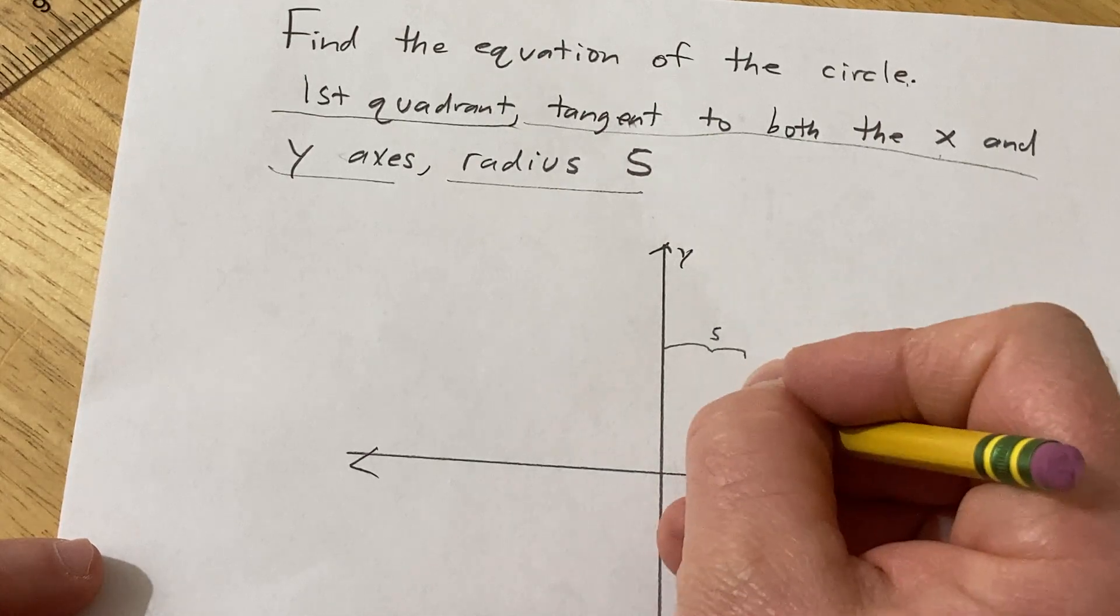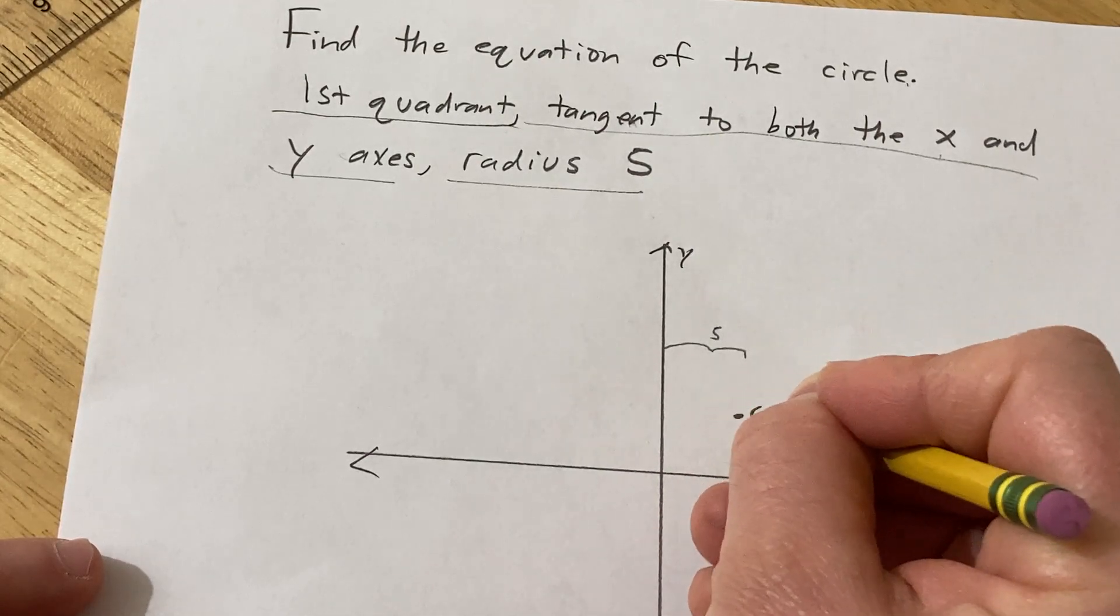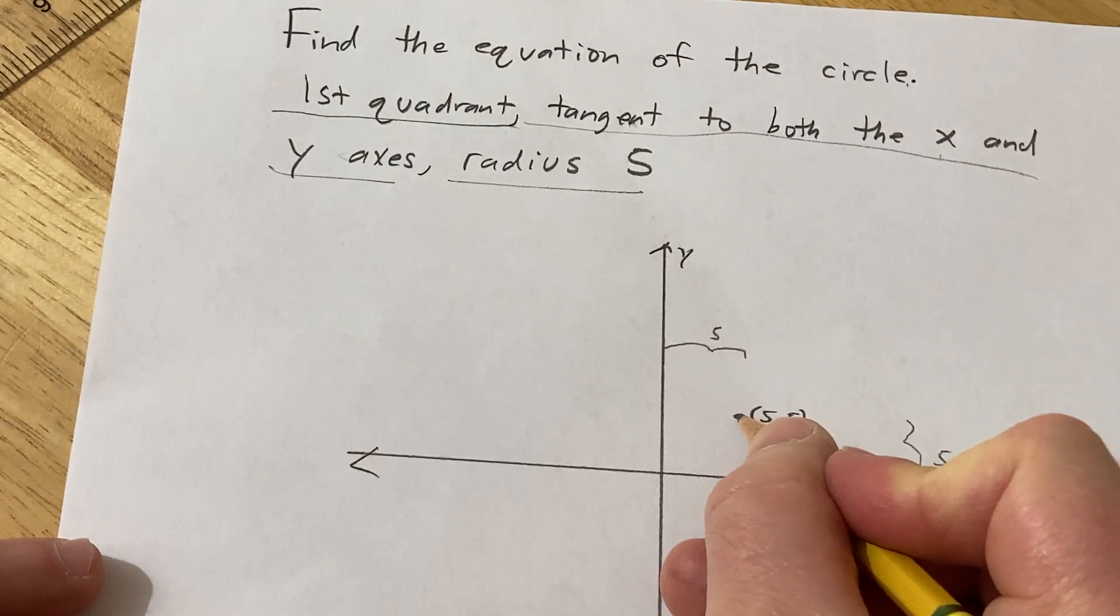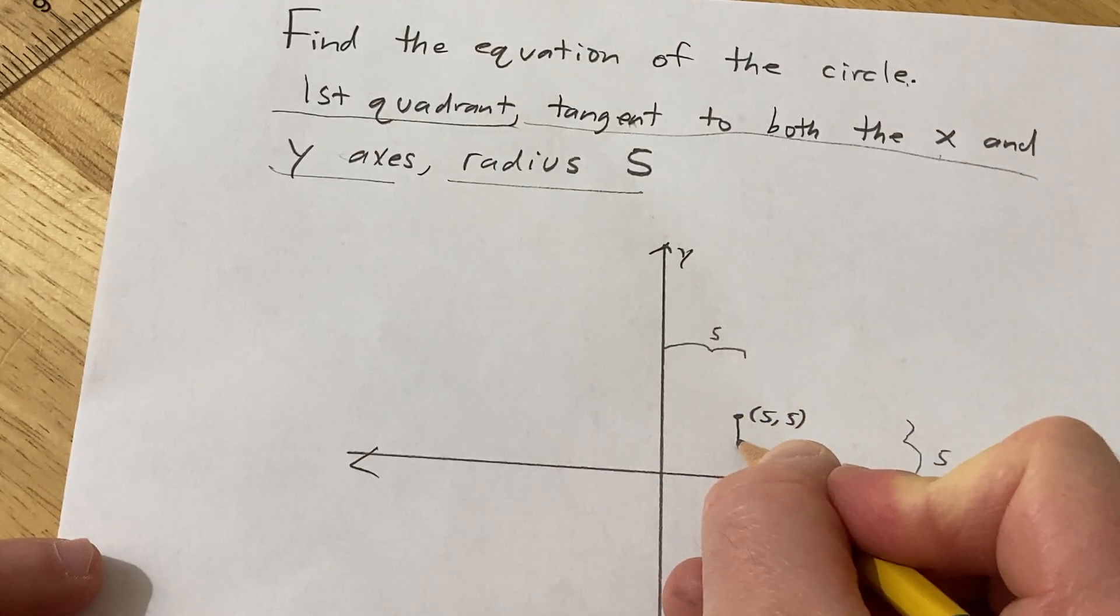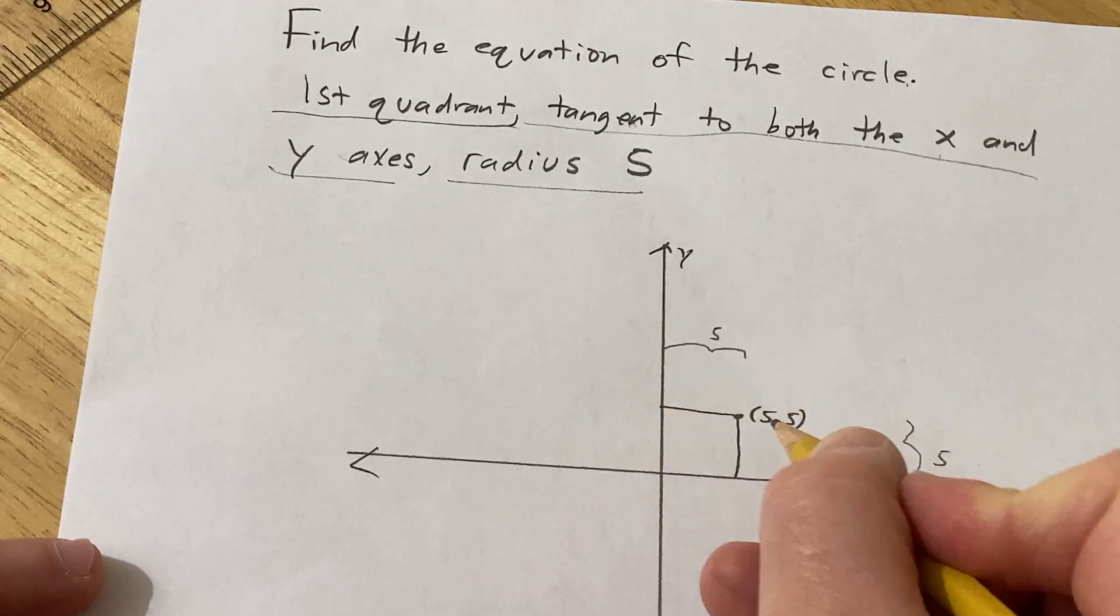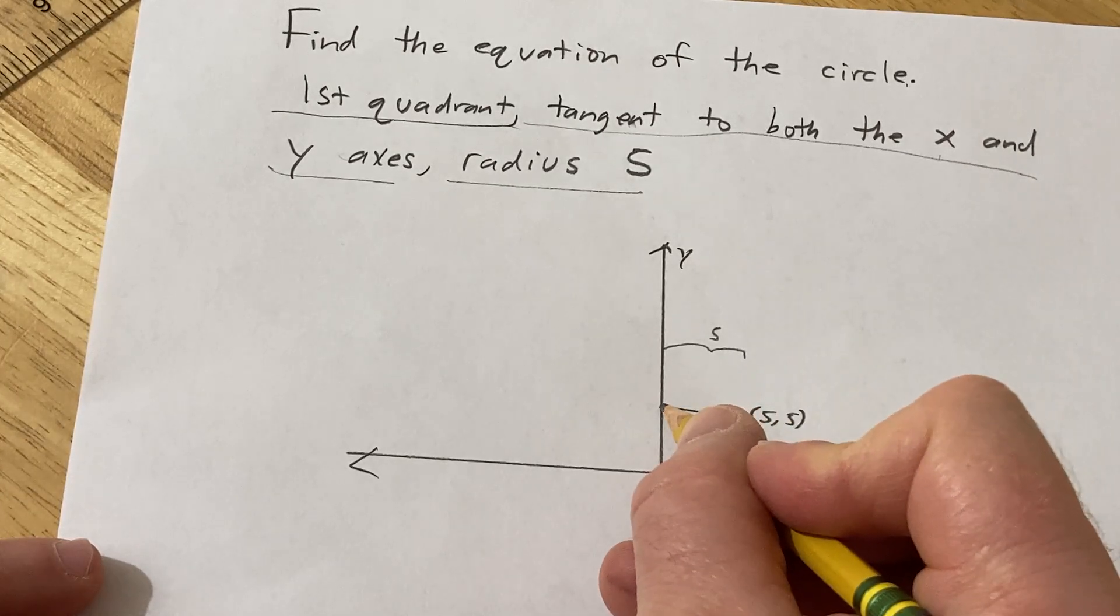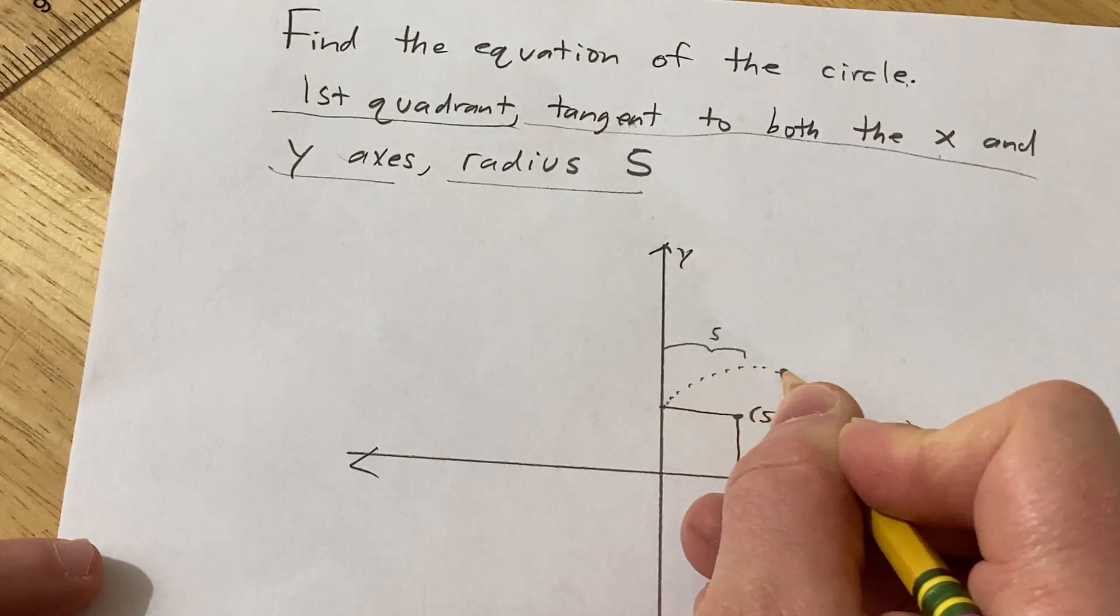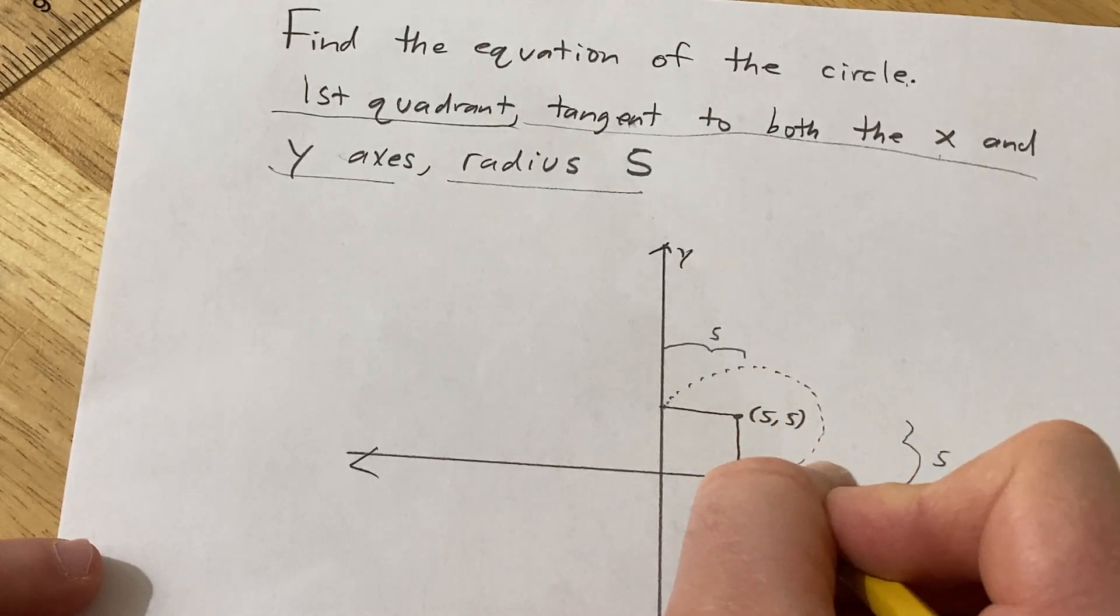That's only going to happen when we're here at the point (5,5). Because in this case, the center is a distance of 5 from the x-axis and a distance of 5 from the y-axis. So the circle will be tangent to both axes and it will have a radius of 5.